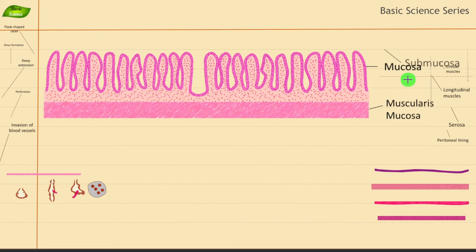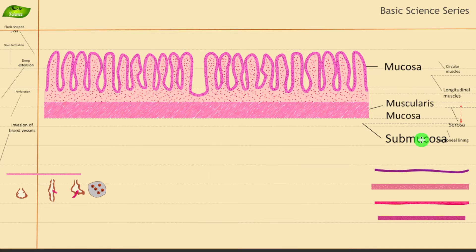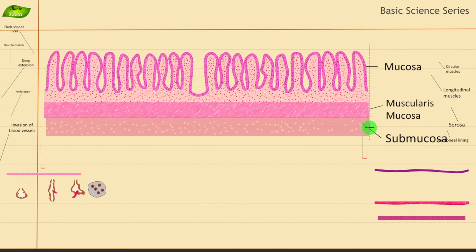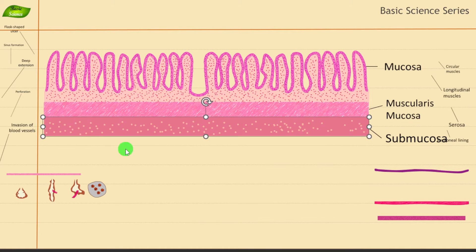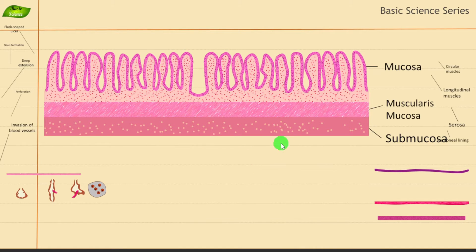Moving on to the submucosa — this is also an important component. The submucosa is below the layer of muscularis mucosa. It is the layer positioned beneath the mucosal layer. It contains blood vessels, nerves, and lymphatics, and it aids in nutrient and water absorption during digestion, among many other functions.